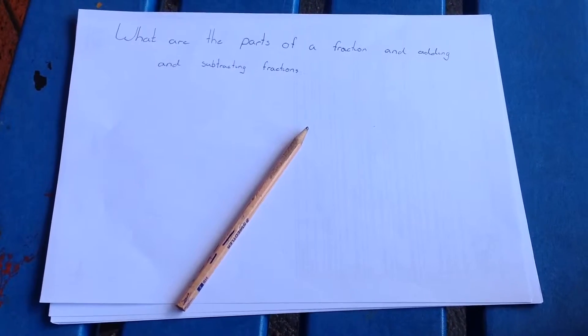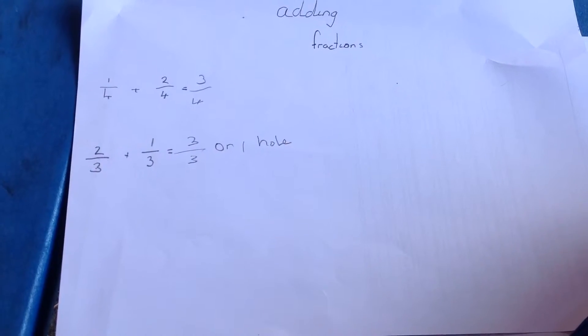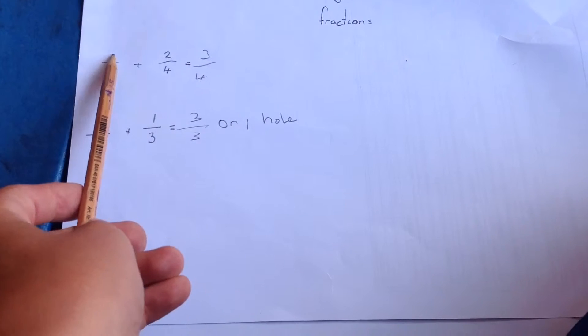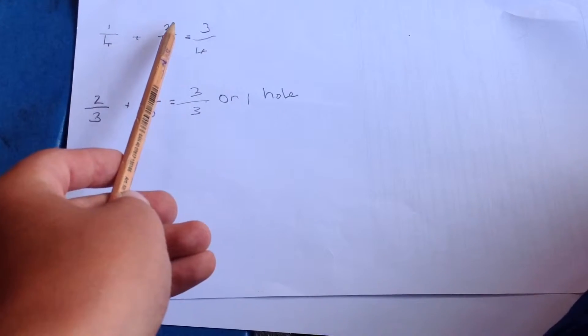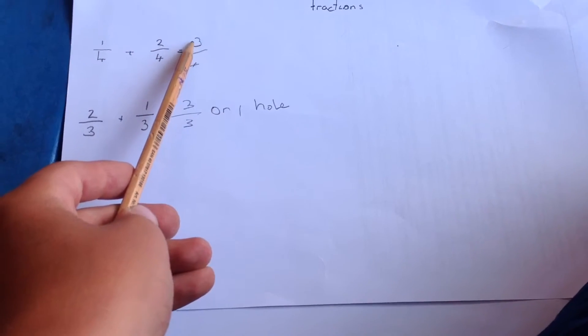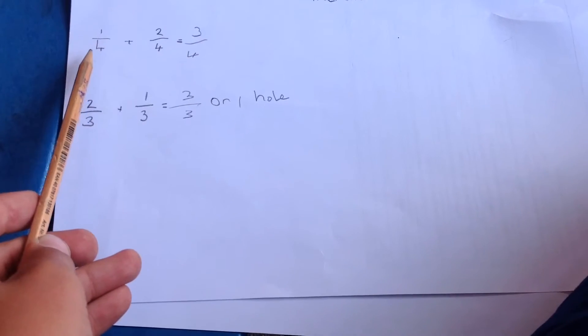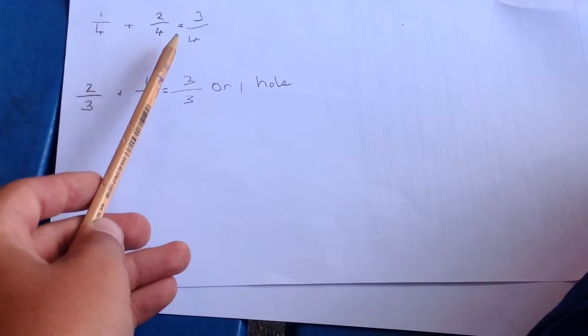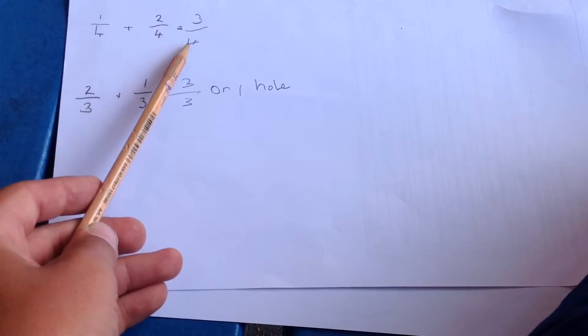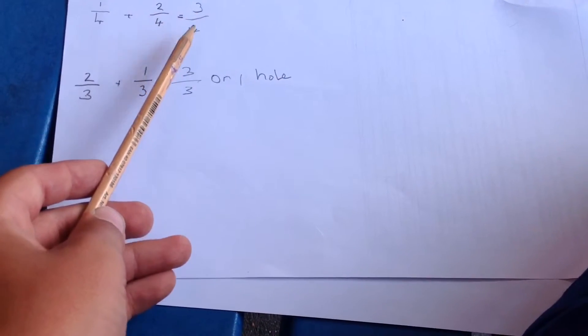What are the parts of a fraction and adding fractions? The two top parts, the numerator, you add up, which would be equal to 3. The two bottom parts you did not add up, so it would equal 4. So it would be 3 quarters or 3 fourths.